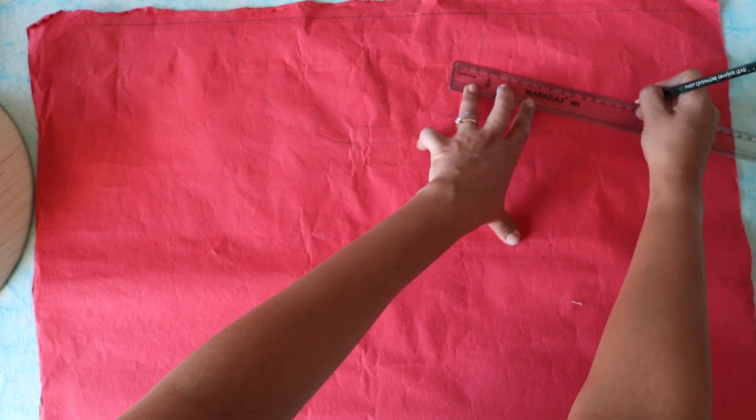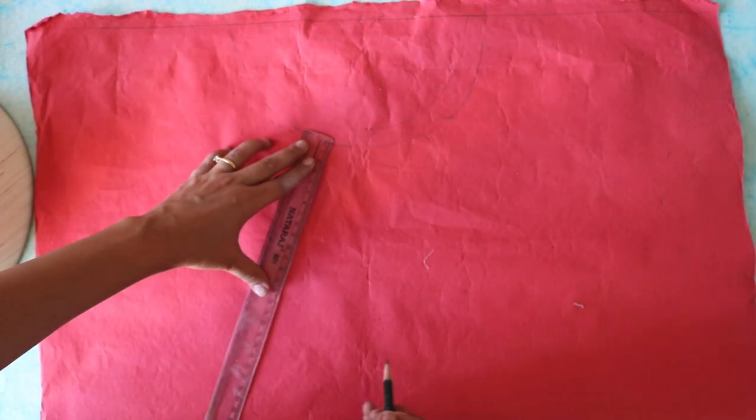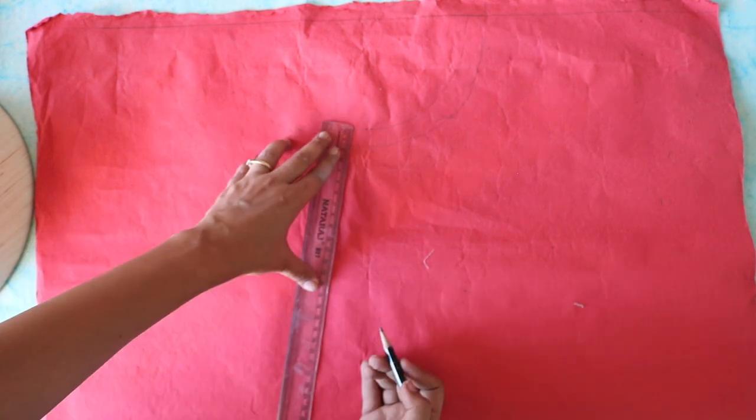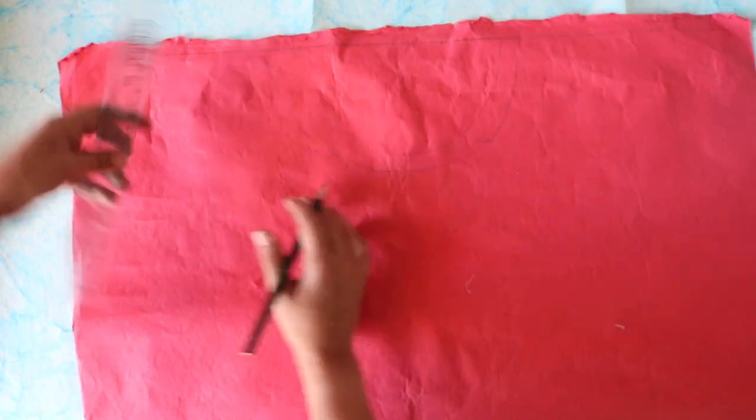Mark it on the sheet extending from the semi-circle drawn before. Keep one centimeter buffer in both measurements as it will help in giving it a neater look when sticking the sheet to the shade.